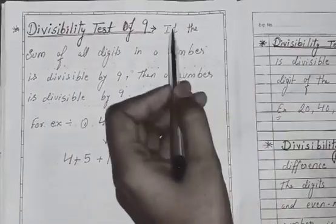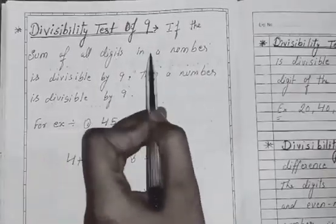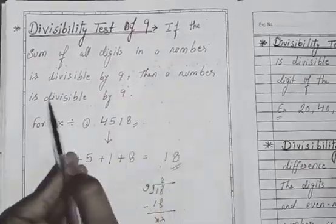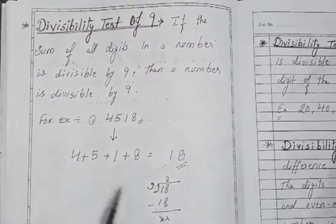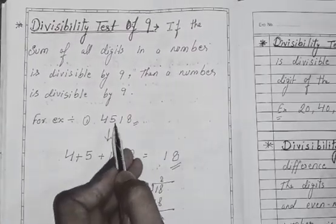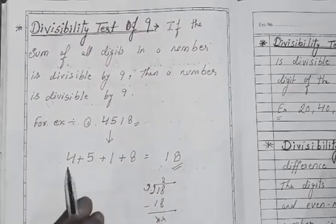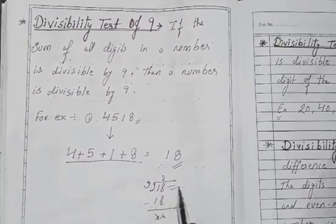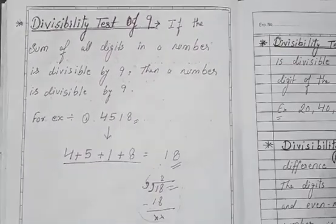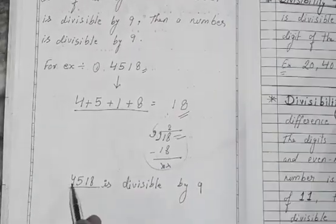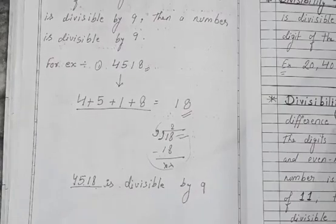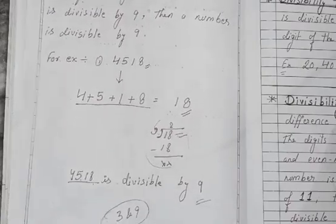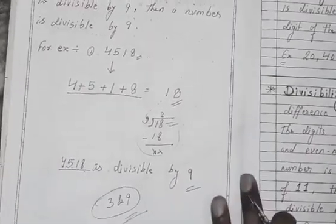Now let's come to the divisibility test of 9. If the sum of all digits in a number is divisible by 9, then the number is divisible by 9. For example, if I take 4518 and add all the digits, we get 18. Since 18 is divisible by 9 (two times), the entire number 4518 is also divisible by 9. Note that the property of 3 and 9 are the same.